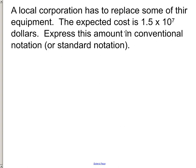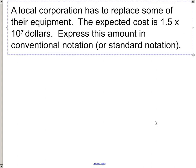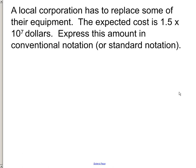A local corporation has to replace some of their equipment. I see a typo there, so let me fix that. The expected cost is 1.5 times 10 to the seventh dollars. So express this into standard notation. Let's go ahead and write this right here so we can see it. It's a positive exponent, so we want to go to the right to make it bigger than one.